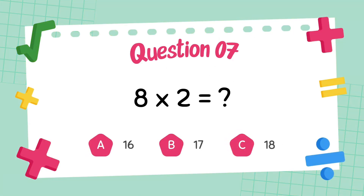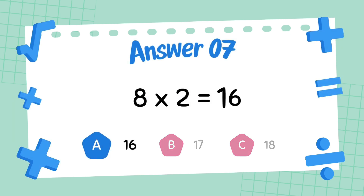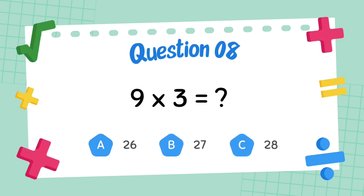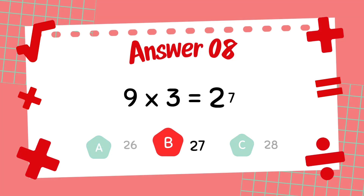What is 8 multiply 2? The answer is 16. What is 9 multiply 3? The answer is 27.